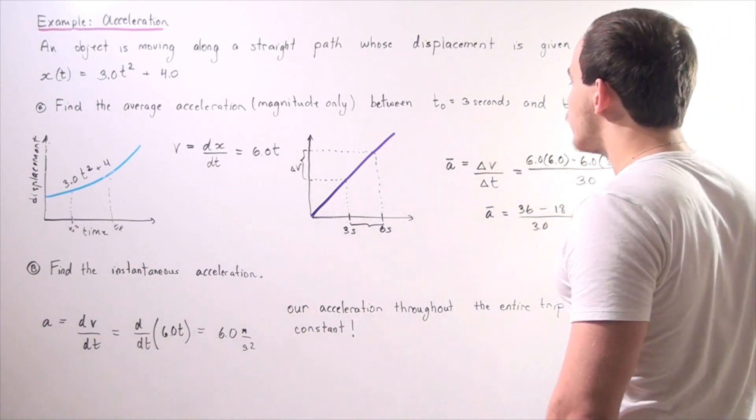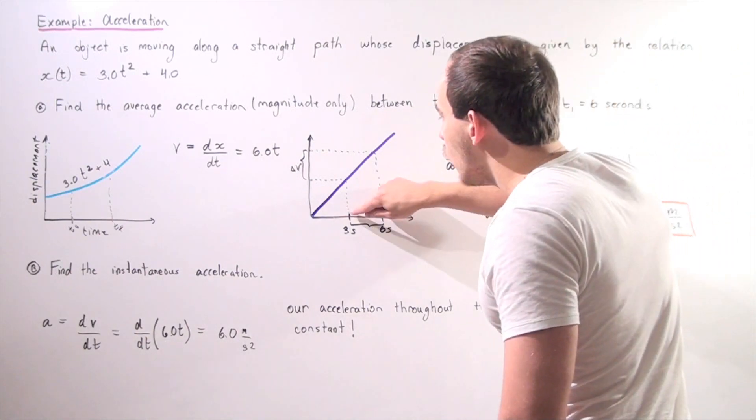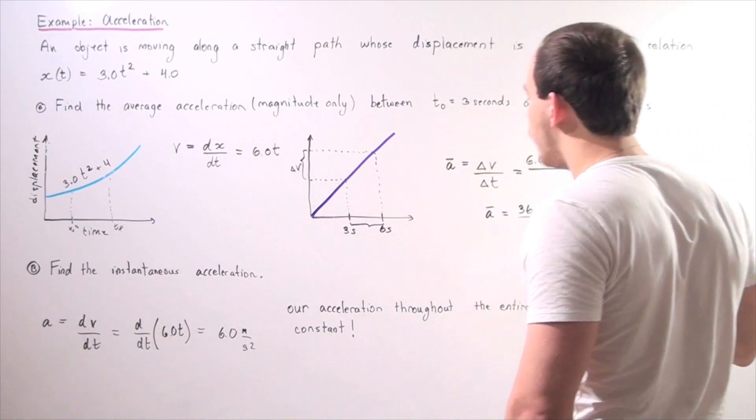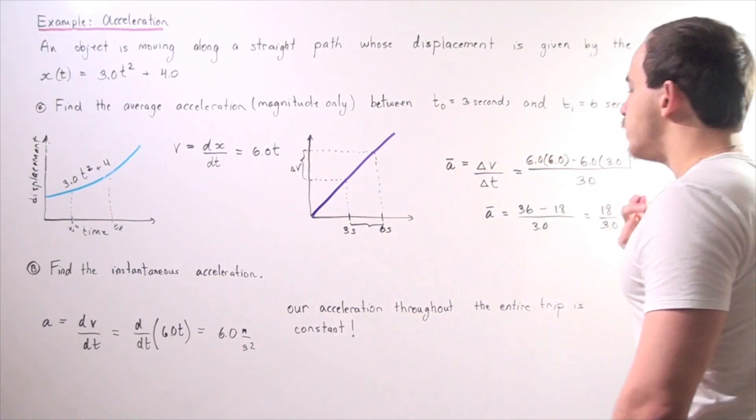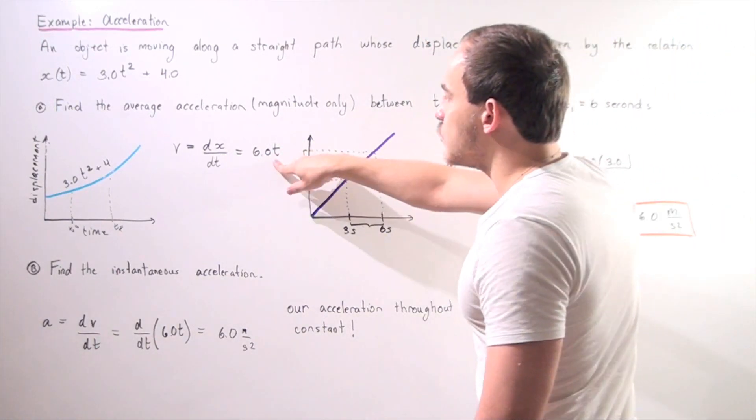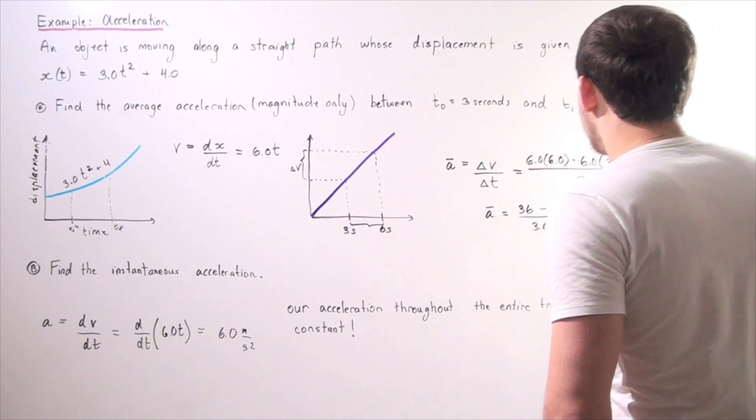Now, what about our v_final or v_initial? Well, we can't really tell what it is according to this graph, but we can tell what it is using this equation. So if we plug in our time values into our velocity function, we'll find our velocities.